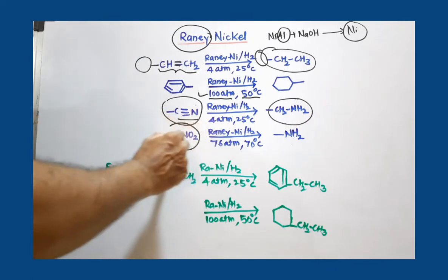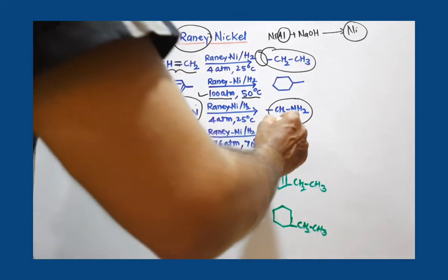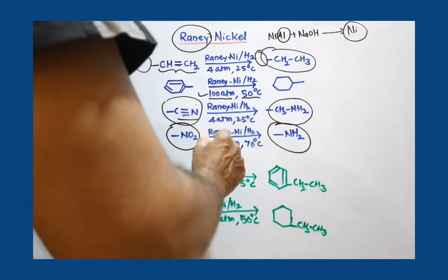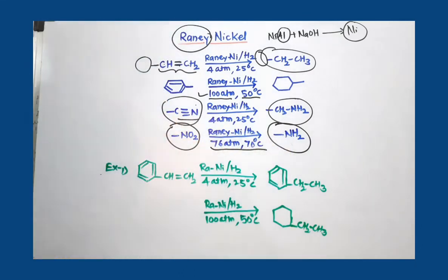If a molecule is having nitro group, it is also reduced to NH2 group. Always remember by considering reaction conditions - 76 atmospheric pressure and 70 degree Celsius.